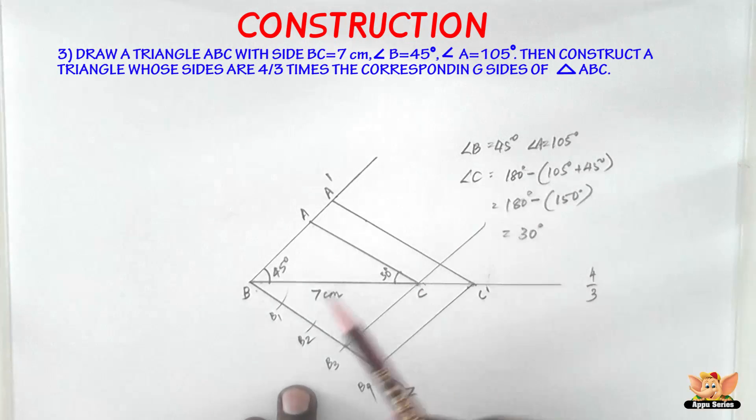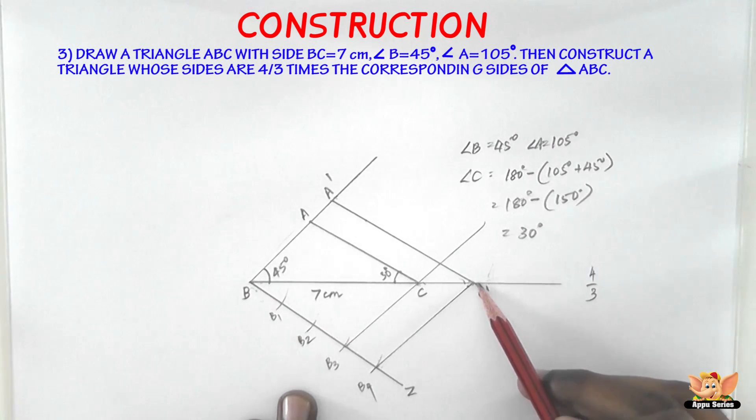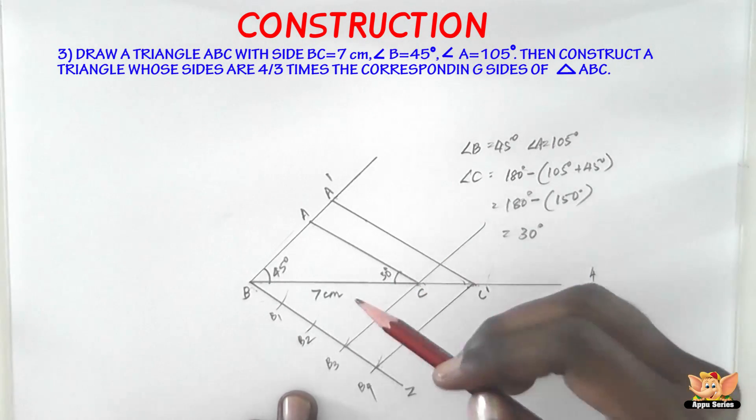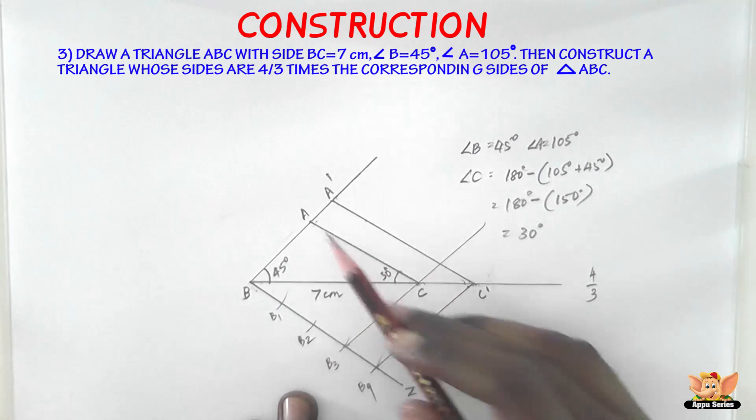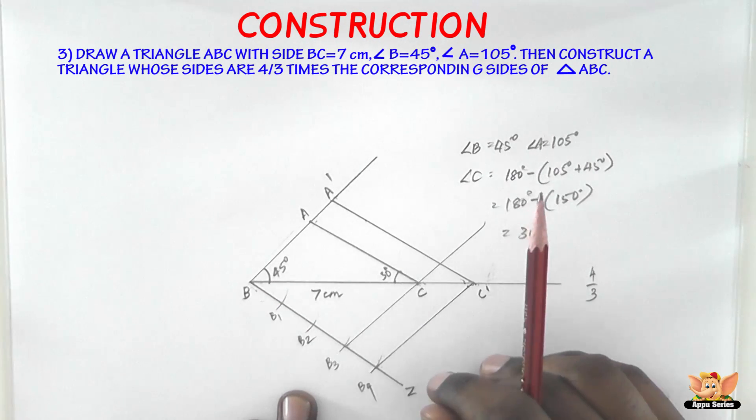So now triangle A dash, B, C dash is the triangle that we needed. So the triangle A dash, B, C dash is the triangle whose sides are 4 by 3 times the corresponding sides.